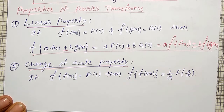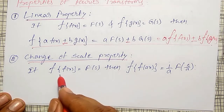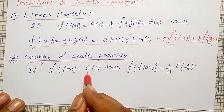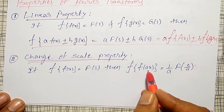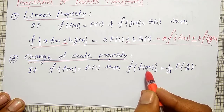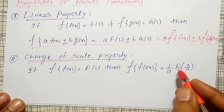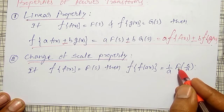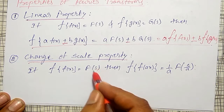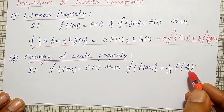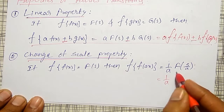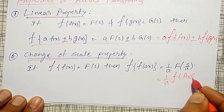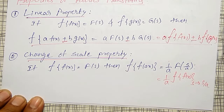Next is the change of scale property. If the Fourier transform of f(x) is equal to capital F(s), then the Fourier transform of f(a·x), where x is multiplied by a, its Fourier transform is (1/a)·F(s/a). So s is also replaced by s/a. Both ways of writing give the same meaning.